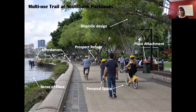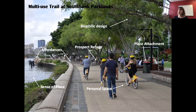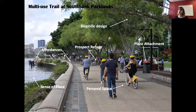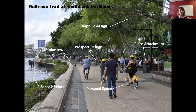South Bank in Brisbane shows how these theories apply to a well-designed pathway. For affordances: ferry stops afford access; a wide pathway affords multiple users simultaneously; the hard surface affords biking, walking and wheelchair use. For prospect refuge: people sitting along the seating wall are protected under tree canopy with their back to vegetation — refuge — while having a view of the trail and river — prospect.